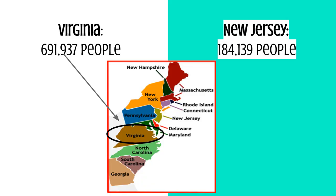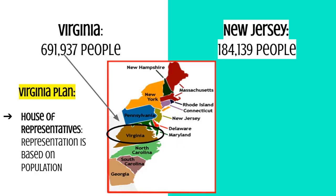Keep in mind, Virginia, authors of the Virginia Plan, had one of the biggest states at the time with nearly 700,000 people. With that being said, it may make sense that they thought representation should be based on population. They had more people — shouldn't they have more of a say in what goes on in their government?